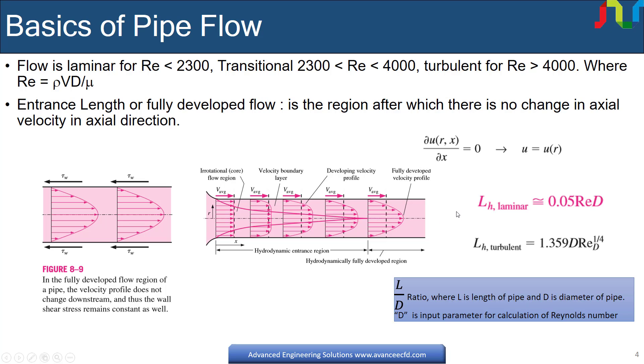For laminar flow entrance region is defined approximately as 0.05 times Reynolds number. D in subscript shows that the Reynolds number is calculated based on pipe diameter. For example, for Reynolds number of 10, entrance length will be 0.5 units. However, for Reynolds number 2000, entrance length is 100 units, too high.